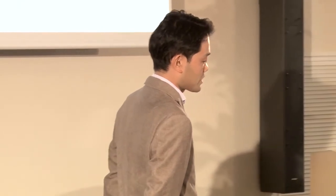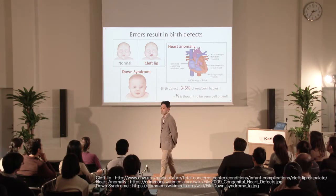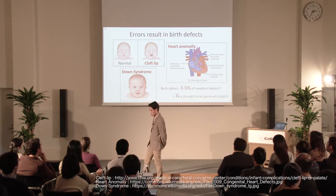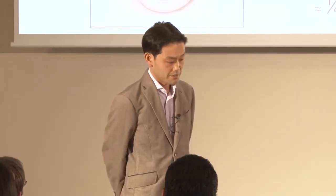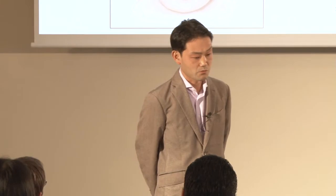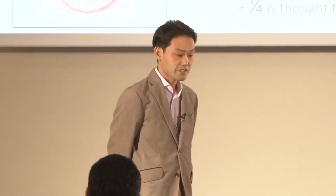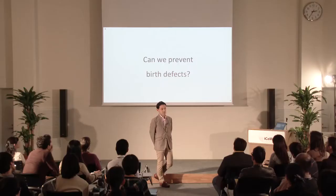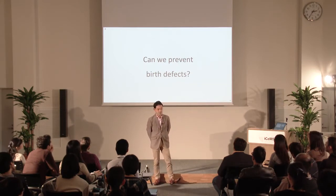That means there are at least one or two patients in one classroom at school. Around a quarter of birth defects come from the germ cells — from the parents — such as genetic mutations or abnormal chromosome counts, as seen in Down syndrome. But no one knows how it happens or what the mechanisms of these diseases are. How can we leave this unchallenged? So this is the first objective of my study: can we prevent birth defects?